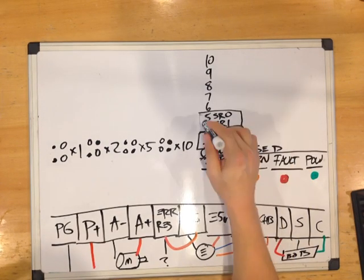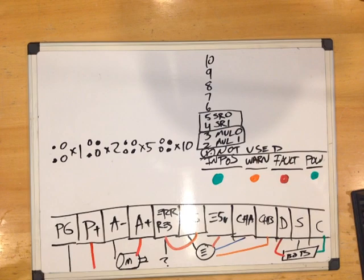Next up we have pins 4 and 5 which are SR1 and SR0 respectively. These set the error limits on the controller, so how many errors to receive until it starts to get itchy. Now there's a whole entire formula on how to calculate this based on the motor RPM and whatnot.